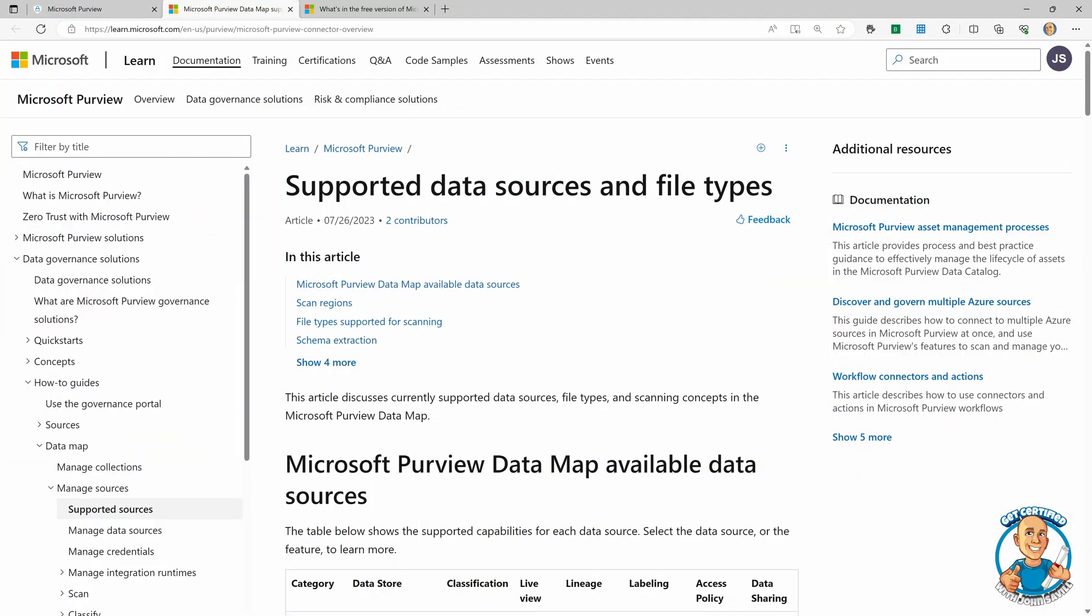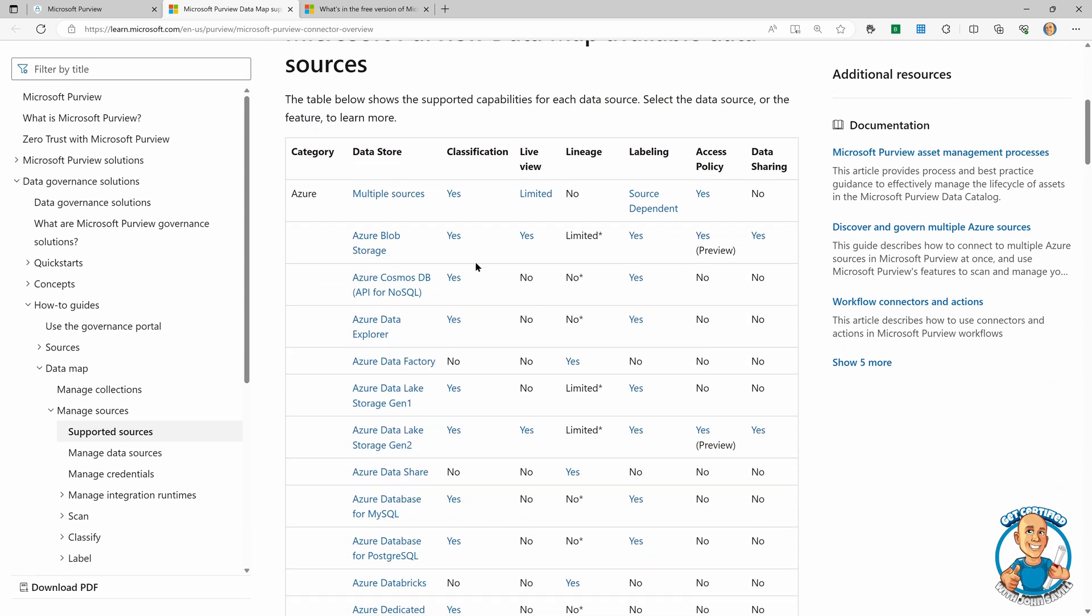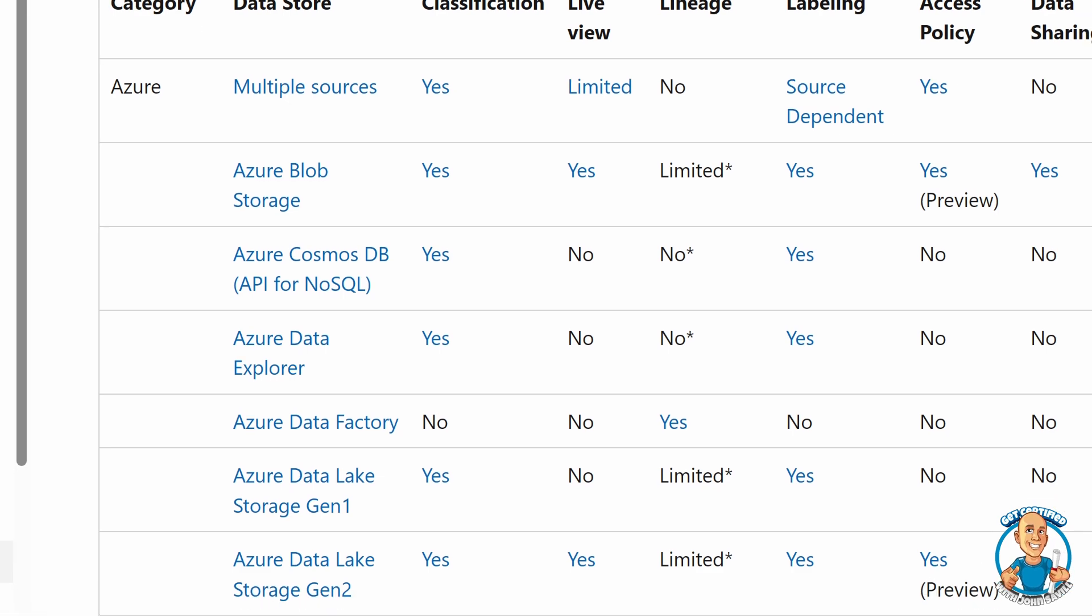If we go and look at its documentation, we can see it talks about supported data sources and file types. So here we can see in Azure, for example, Blob, Cosmos DB, Data Explorer, Data Factory.